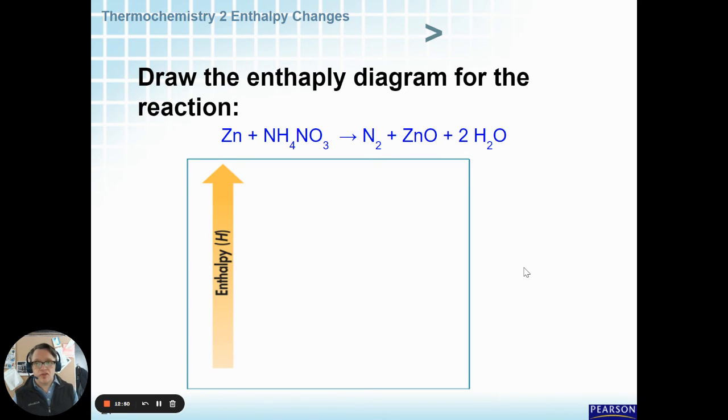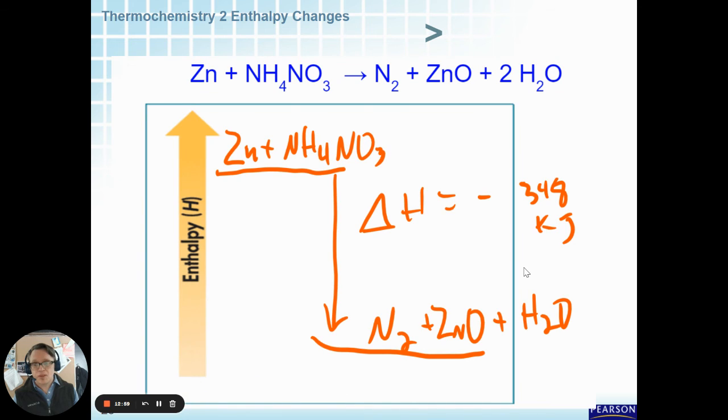Let's try our hand at drawing enthalpy diagrams. How would you draw it for this reaction? Here's how it would look. You would have the reactants starting up high. They're going to lose energy. And so, the products would be down low. And, you would write delta H and the amount of energy change there.